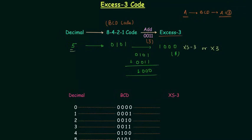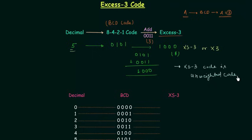The next important point is the weight. In case of XS3 code we don't have positional weights, so XS3 code is an unweighted code. XS3 code is also a 4-bit code — we use 4 bits to represent digits 0 to 9 in XS3.